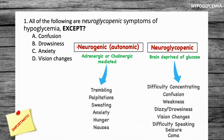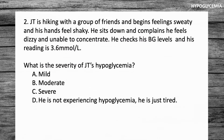So let's go back to the question. All of the following are neuroglycopenic symptoms except — confusion is neuroglycopenic, drowsiness is correct as well, but anxiety is neurogenic. So the answer here is anxiety.